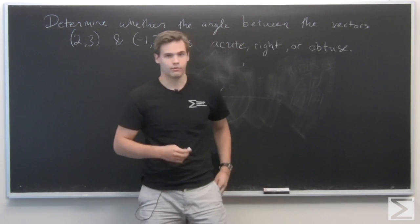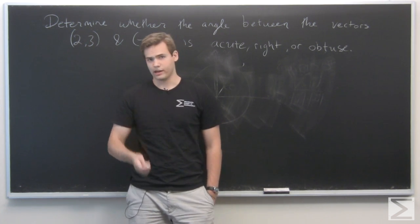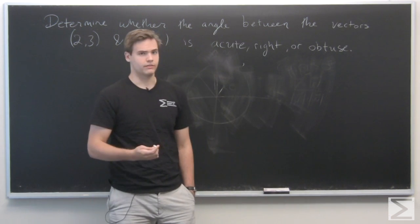So the nice thing about just determining whether or not it's acute, obtuse, or right is we don't actually have to compute the magnitudes of the vectors. We just have to take the dot product and look at the sign of it.